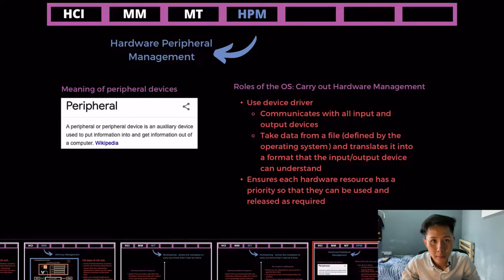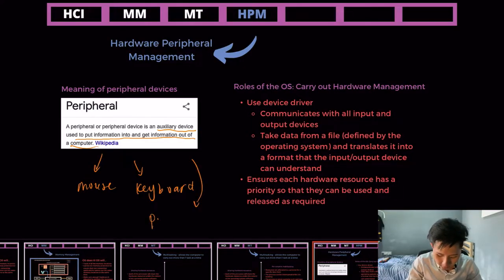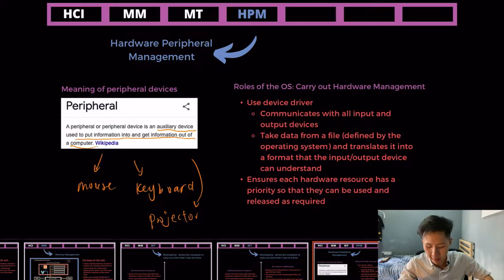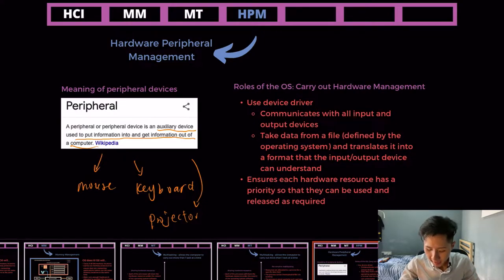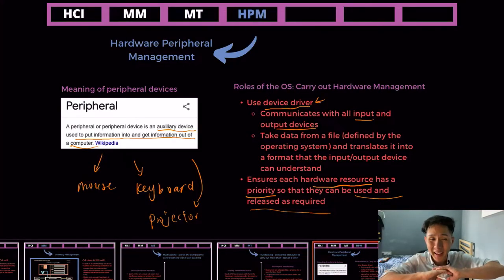The fourth function of the OS is hardware peripheral management. A peripheral is an auxiliary device used to put information into and get information out of the computer — examples include a mouse, keyboard, or projector. To ensure hardware can work smoothly with software, the OS uses device drivers. Device drivers help input and output devices communicate, translate data into a format the input and output device can understand, and ensure hardware resources have a priority so they can be used and released as necessary.